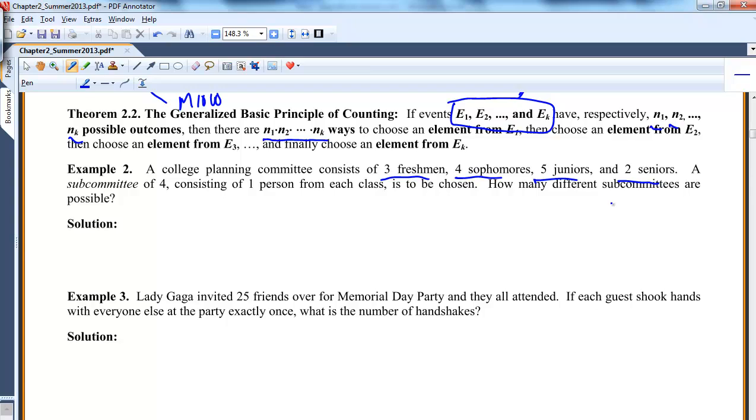Out of that committee, we're going to make a subcommittee of four, where we get to choose one freshman. So if you think about it, we have three choices for freshman: freshman 1, freshman 2, freshman 3. For sophomores, we have four choices. So sophomore 1, sophomore 2, sophomore 3, sophomore 4. Imagine there's four branches off of each of those. Five juniors, two seniors.